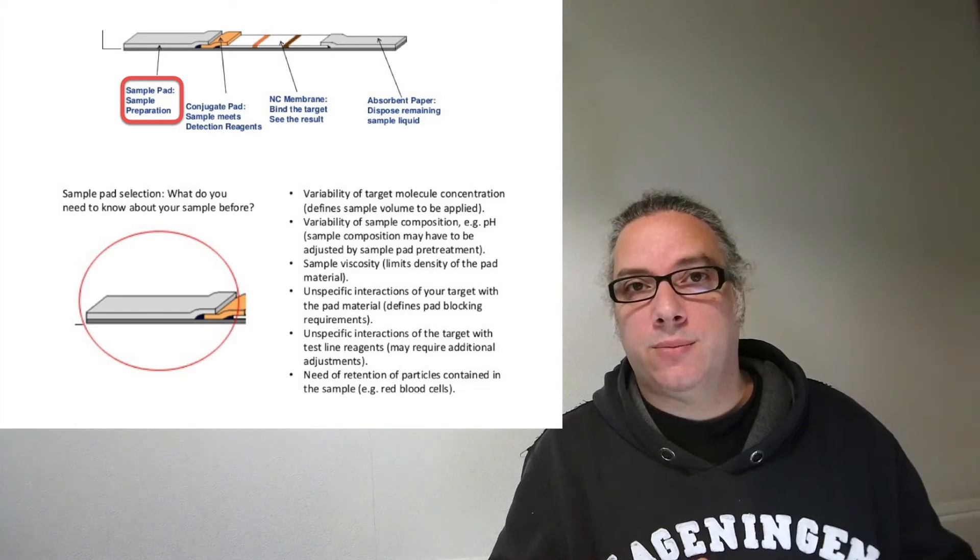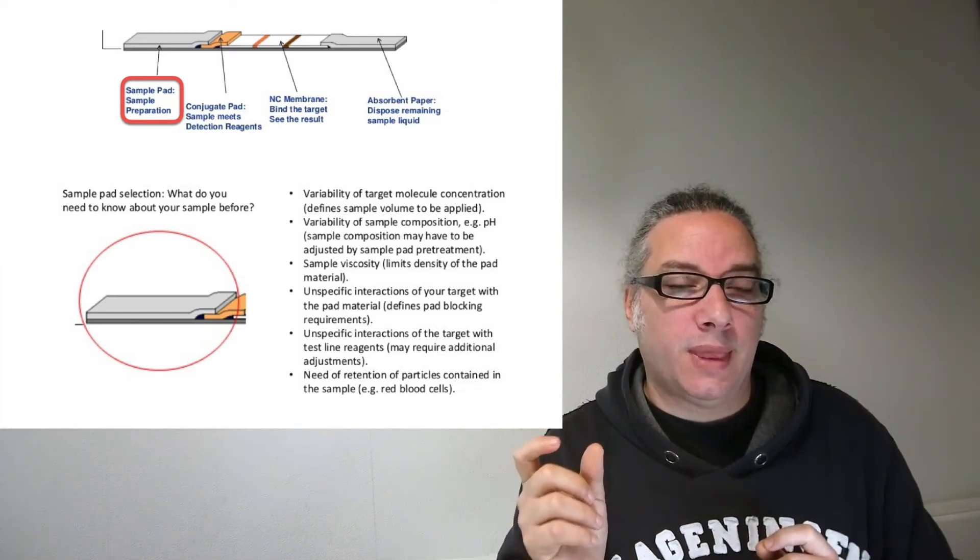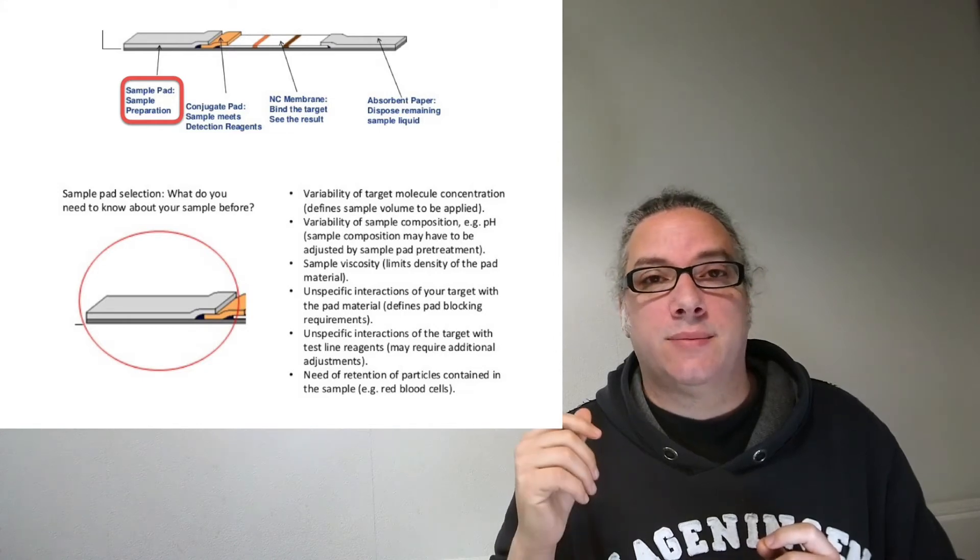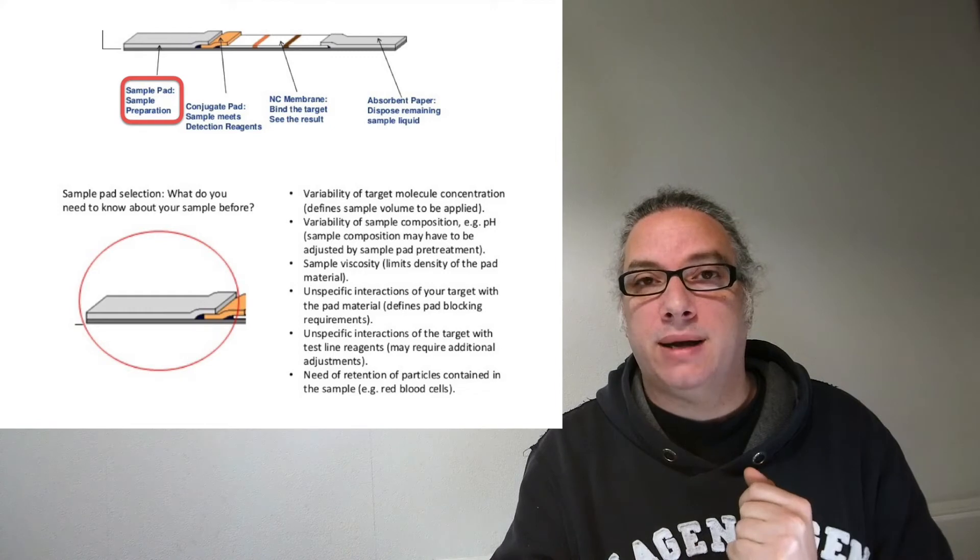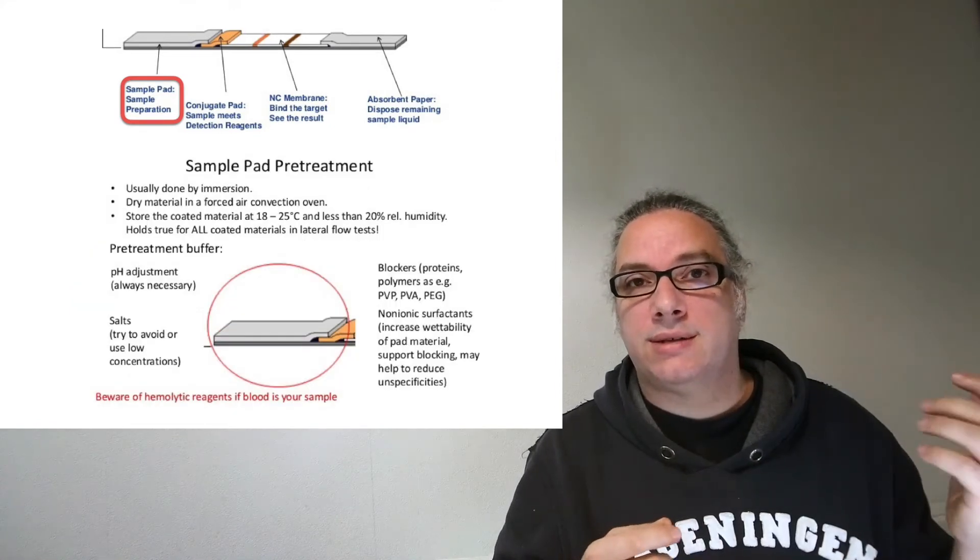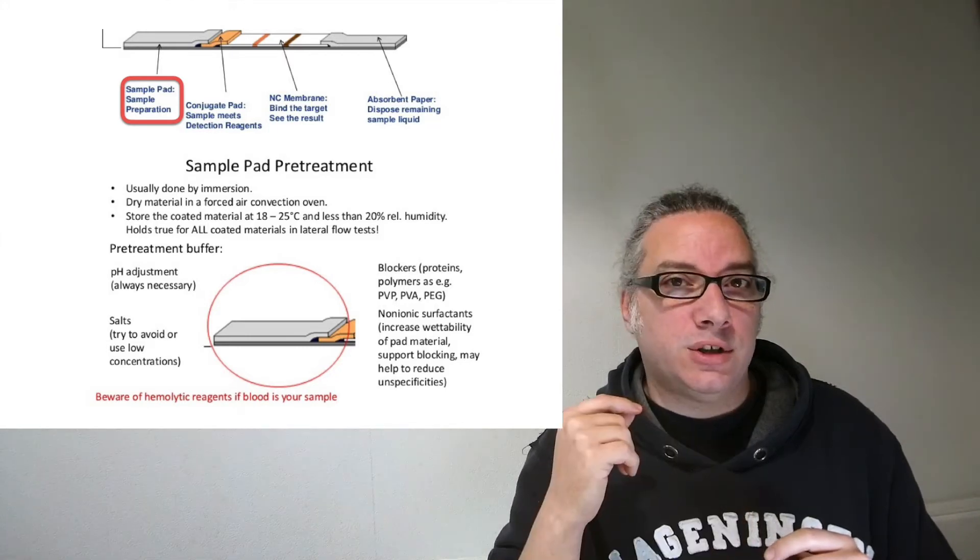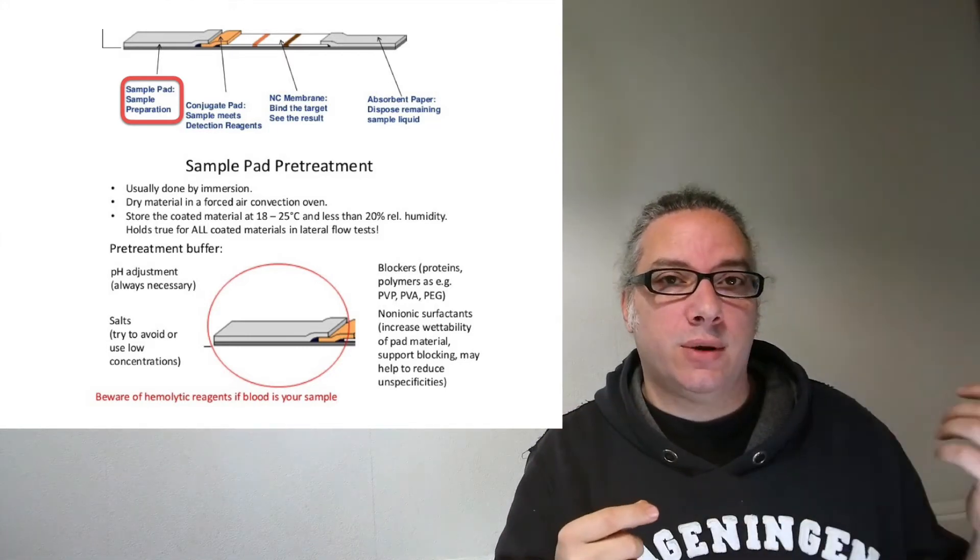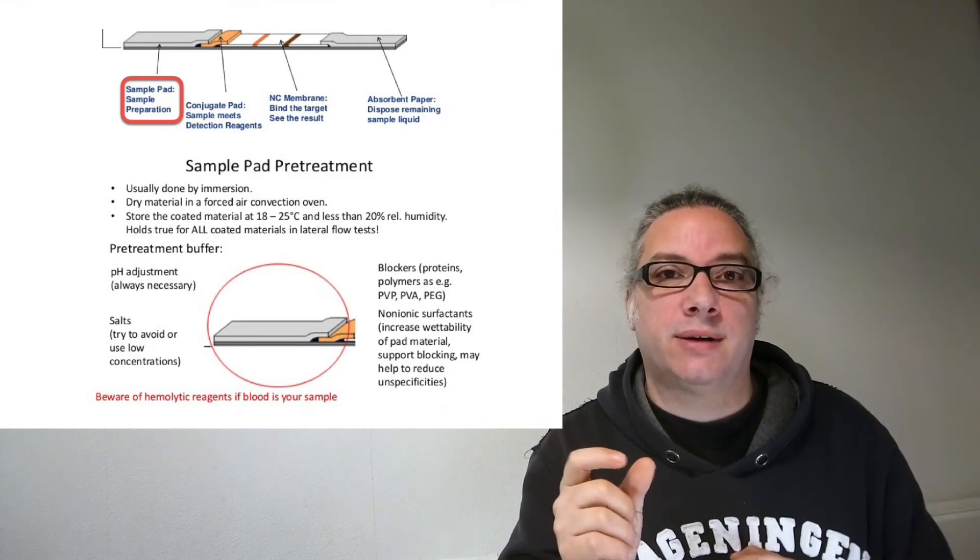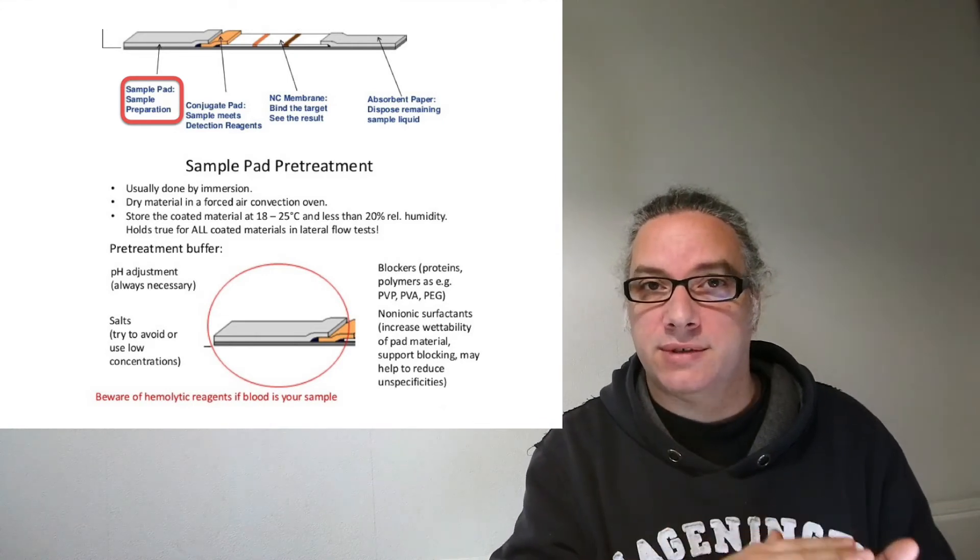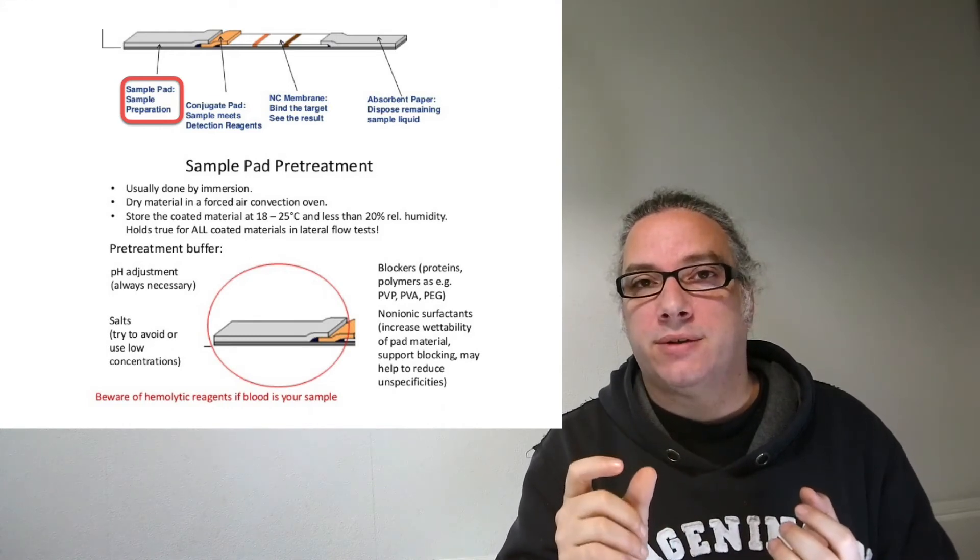If you know which liquid you're putting, you can treat the sample pad in different ways. For example, you can change the pH, have binders for salt to remove them, change the viscosity by adding more liquid, and then decrease the viscosity of your liquid.